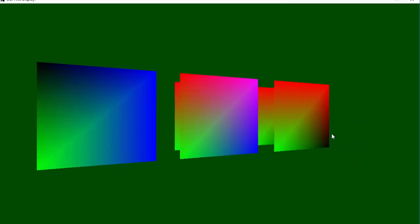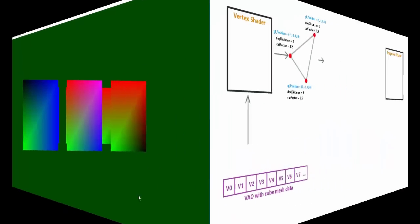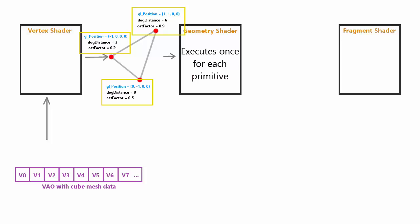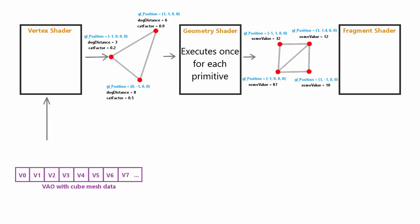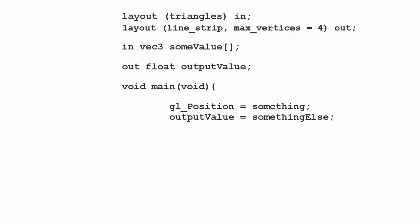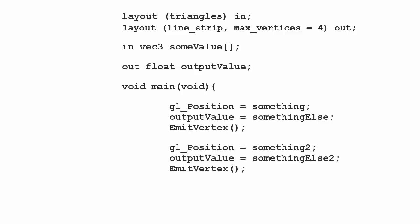To summarize: the geometry shader is a shader stage that goes between the vertex and fragment shaders. It executes once per primitive, has access to all vertices in that primitive along with any per-vertex information from the vertex shader, and outputs any number of a chosen primitive type with defined per-vertex values. In code, you declare input and output primitive types with layout statements, define input variables as arrays matching vertex shader outputs, set gl_Position and output variables per vertex, call emit_vertex after each, and call end_primitive to start a new strip.